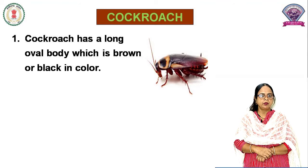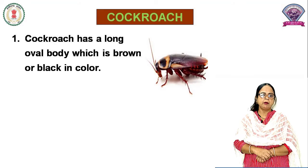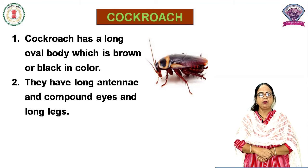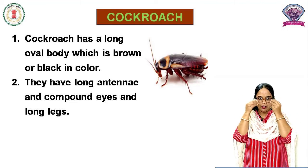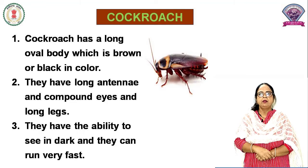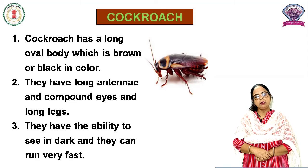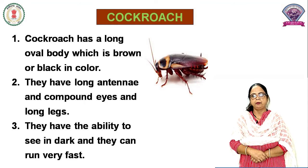Next is Cockroach. Cockroach has a long oval body which is brown or black in color. Aapne cockroach dekha hoga — gharon mein bhi hota hai. Bhoore aur kaale color mein paye jaate hain. They have long antenna, compound eyes and long legs. They have the ability to see in dark and they can run very fast. Yeh bahut tez bhaagthe hain — aapne apne gharon mein dekha hoga.